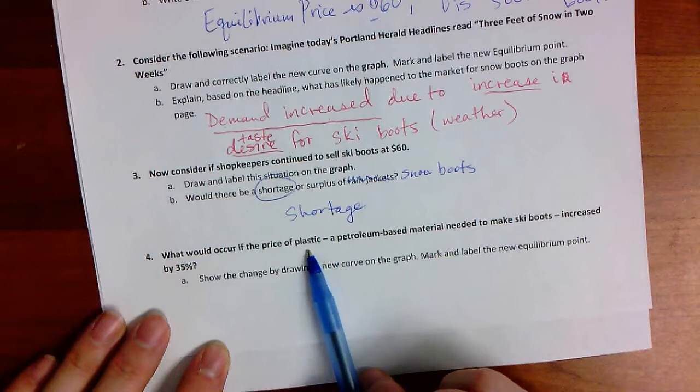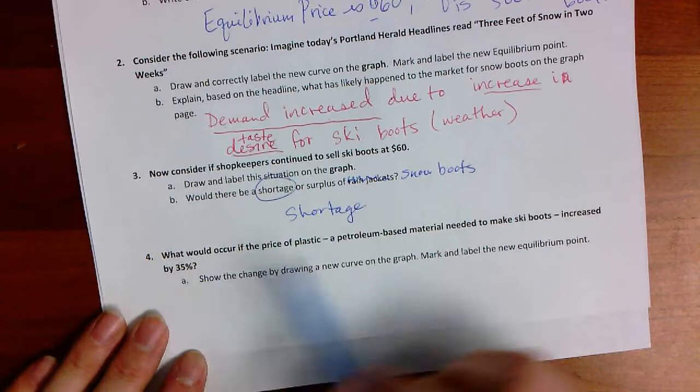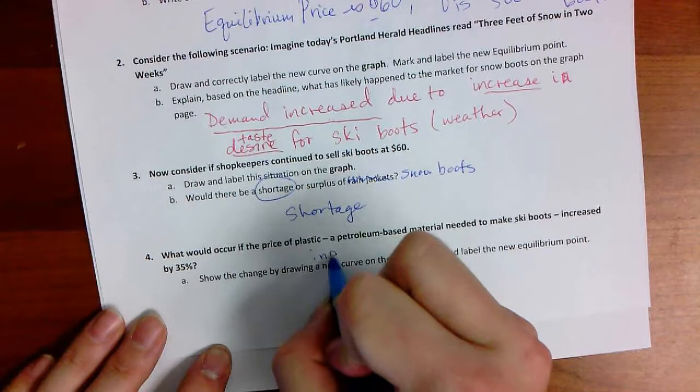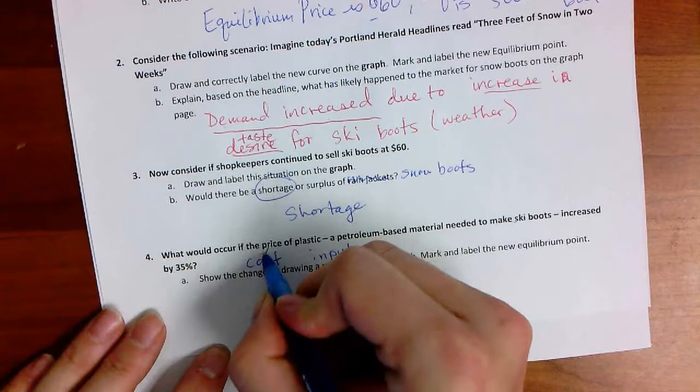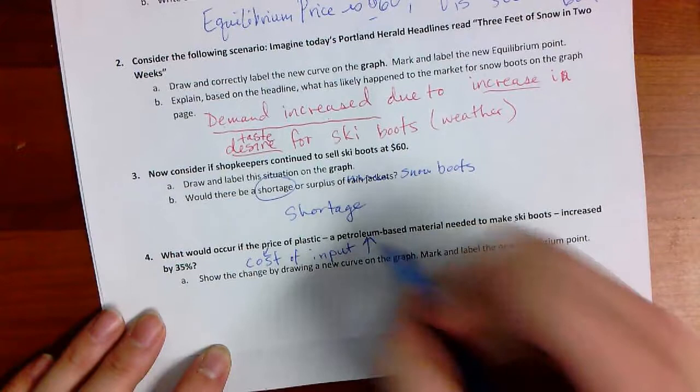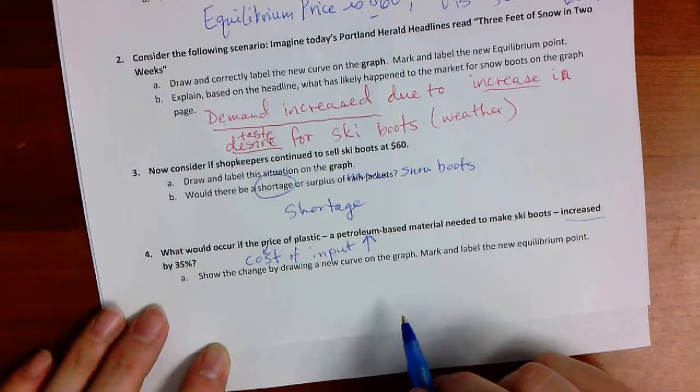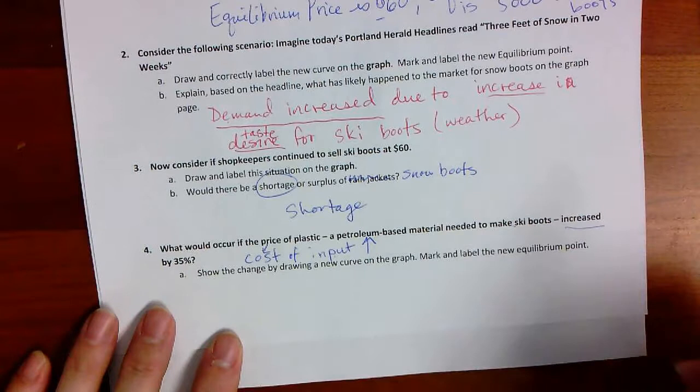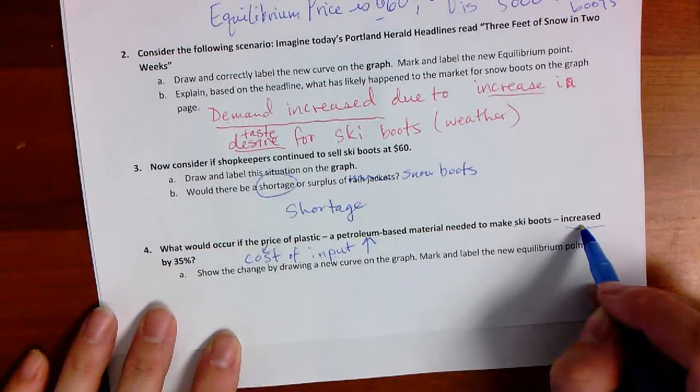Now, there's one last scenario, and this is why you have to stay organized here. What would occur if the price of plastic or petroleum-based material needed to make ski boots increased by 35 percent? Plastic is an ingredient. What do we call that in economic terms? An ingredient for ski boots. That's called an input. Remember. What happens if the cost of inputs goes up? It's increasing by 35 percent. Does that affect the demand curve or is it the supply curve? Well, if you did well on the last quiz, you know that an increase in cost of input increases supply. Excuse me. Decreases. Decreases supply. An increase in cost of inputs decreases supply. People who are in the business, they can't make as much of a profit. That discourages them. That's going to decrease supply. So, we have to plot that here on the curve.